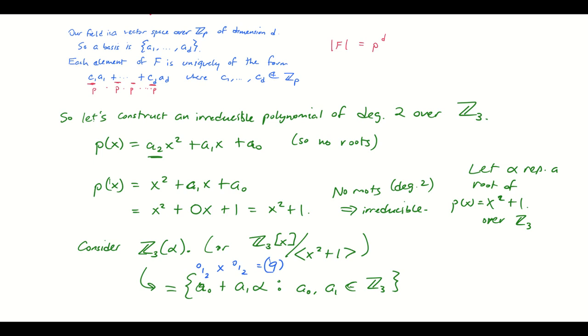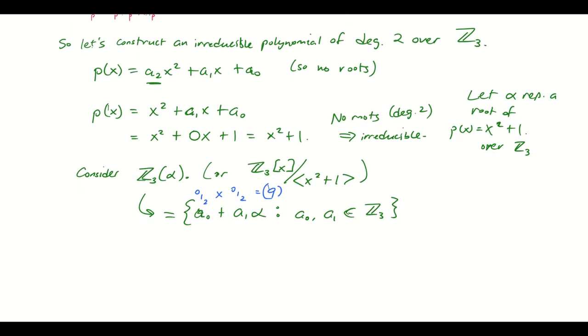We can actually create addition tables and multiplication tables for this field. I'm not going to do that whole construction in this video, I'm trying to keep this fairly short, but let's just illustrate how we might multiply in Z mod 3 adjoint alpha. So let's say I have two elements, a kind of non-boring one. So let's say like 2 plus alpha and then 1 plus 2 alpha.